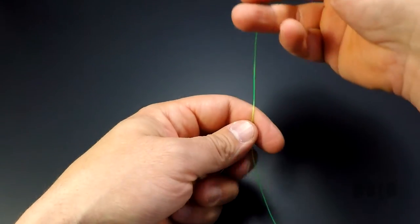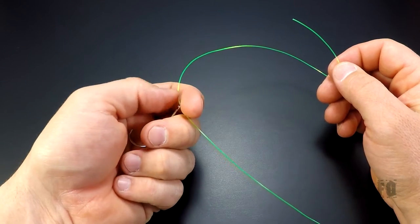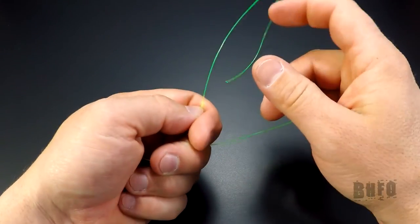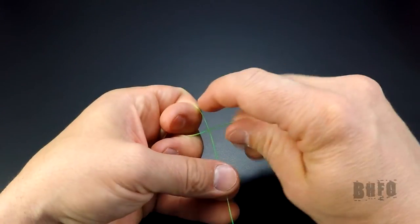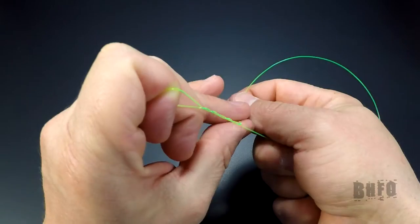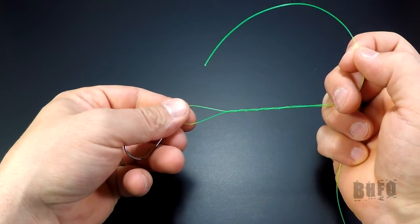Leave your index finger above the hook eye. Now take the tag and wrap it four to ten times around the main line. Find what works best for you. Once the wraps are finished, take the tag and put it through the loop where your index finger was.